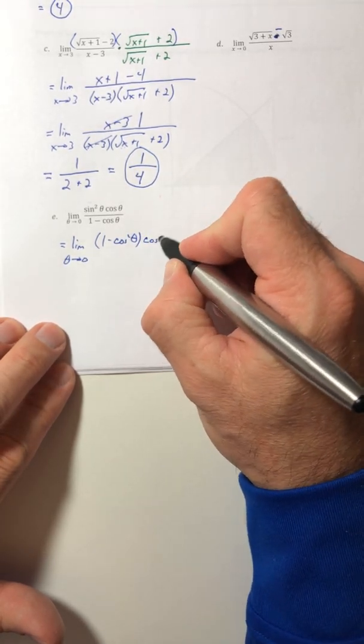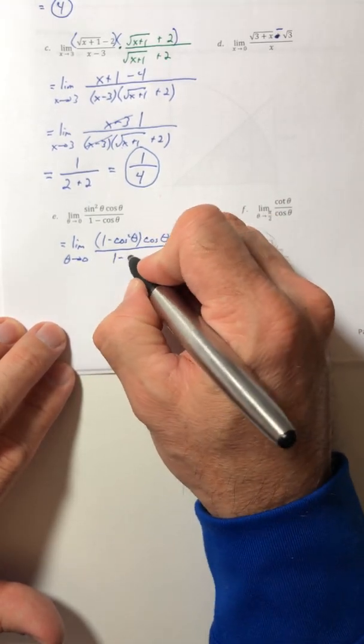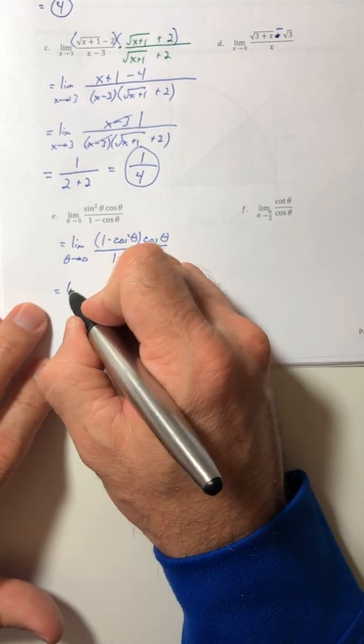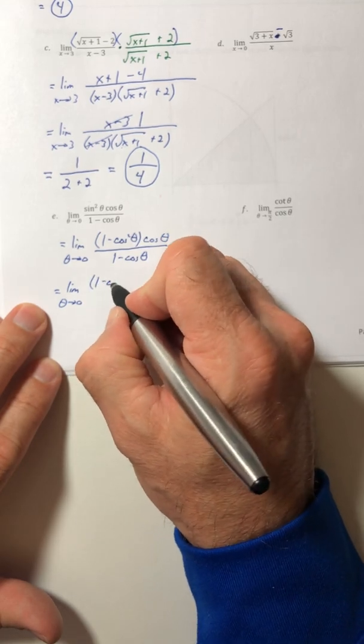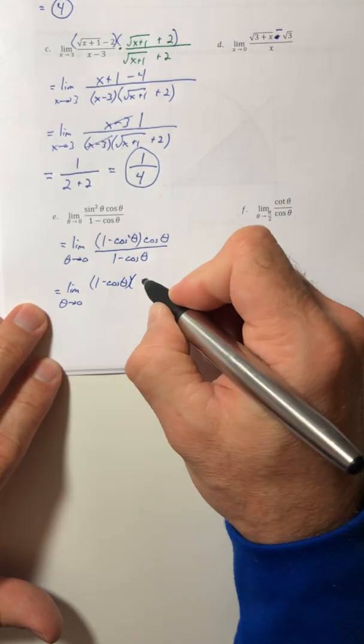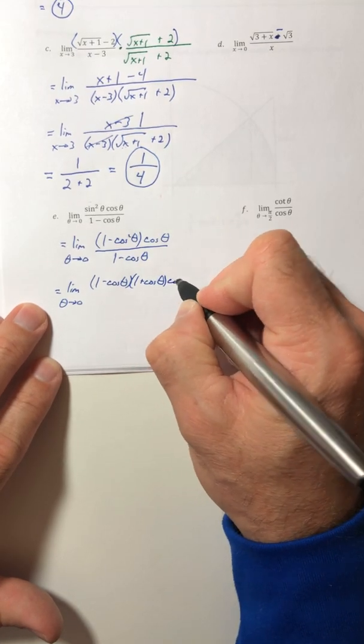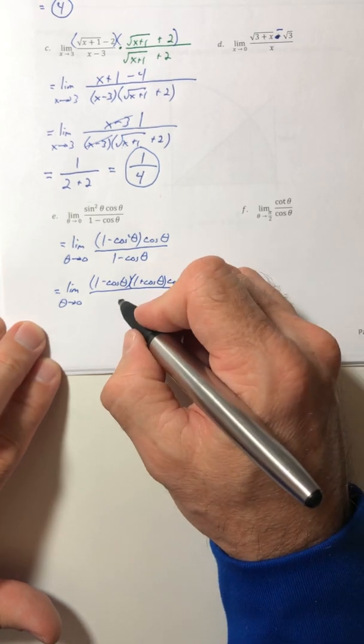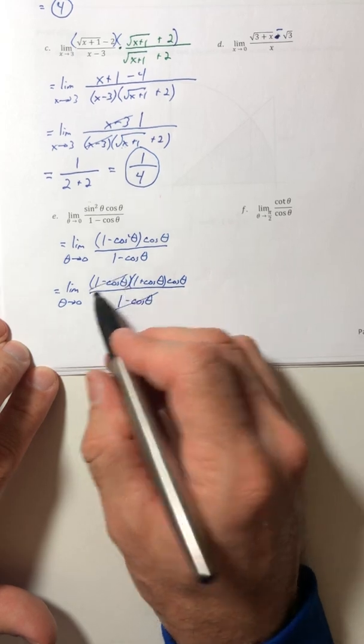I'm going to actually take advantage of that sine squared. I'm going to switch it out with one minus cosine squared. And now I can factor that. So one minus cosine, one plus cosine.